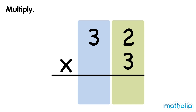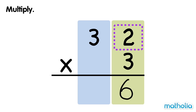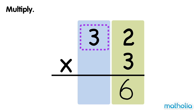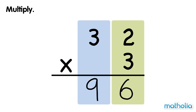Multiply. Let's find 32 times 3. First, multiply the ones by 3. 2 ones times 3 equals 6 ones. Next, multiply the tens by 3. 3 tens times 3 equals 9 tens. 32 times 3 equals 96.